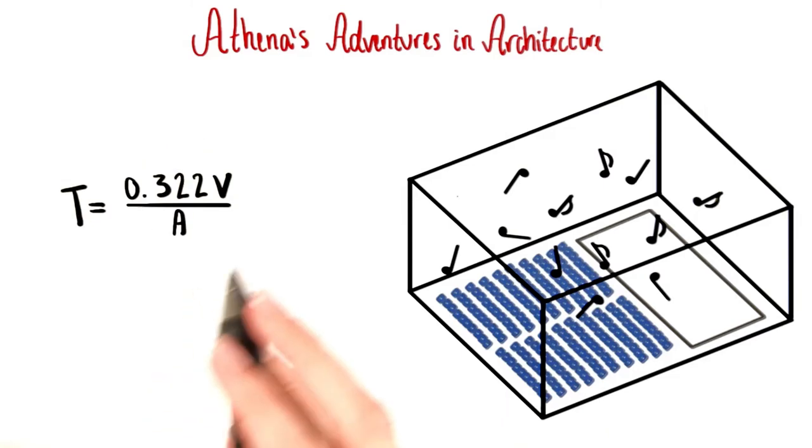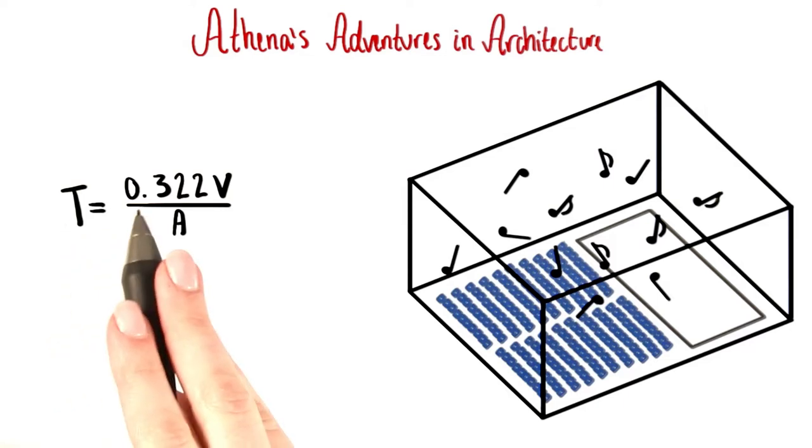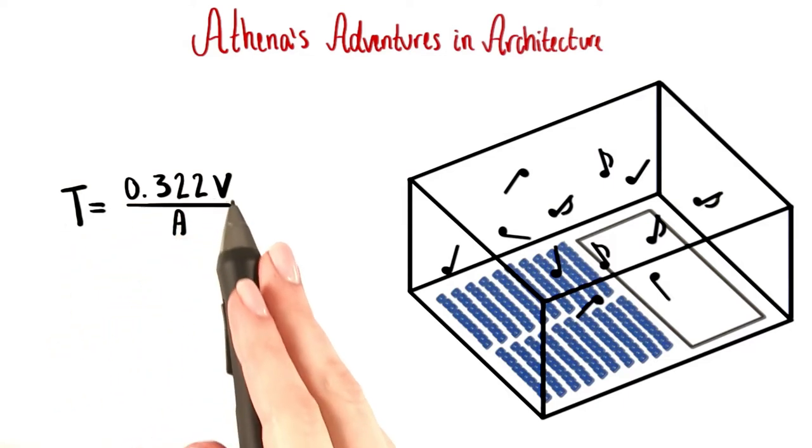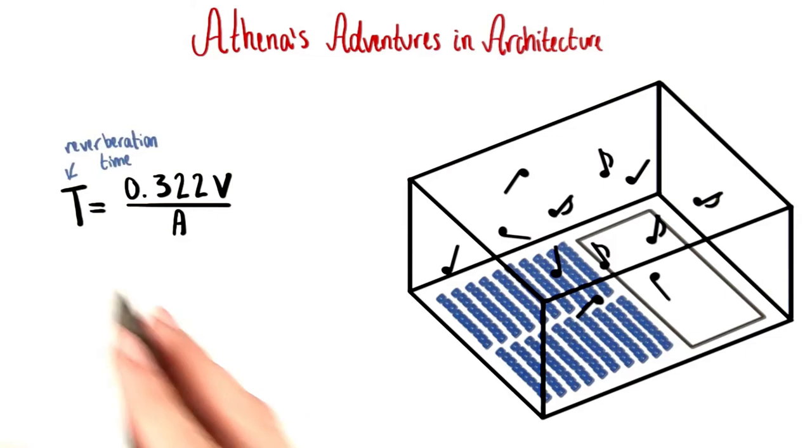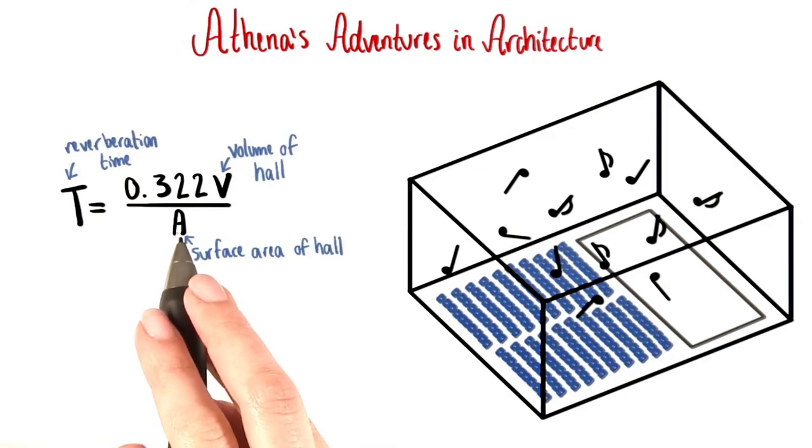Athena has figured out a simplified equation for reverberation time in the hall. The equation is T equals 0.322V over A. Here, T stands for reverberation time, V is the volume of the hall, and A is the surface area of the hall.